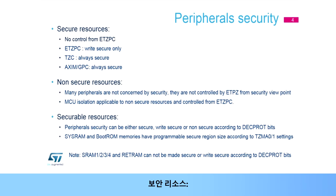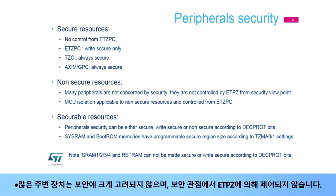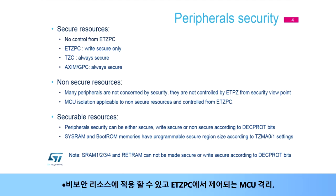Secure Resources have no control from ETZPC. ETZPC is write secure only. TZC is always secure. AXIM-GPC is always secure. Non-Secure Resources: many peripherals are not concerned with security — they are not controlled by ETZPC from the security viewpoint. MCU Isolation is applicable to non-secure resources and is controlled from ETZPC.